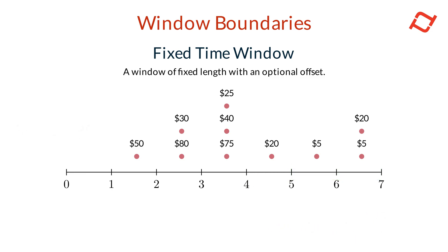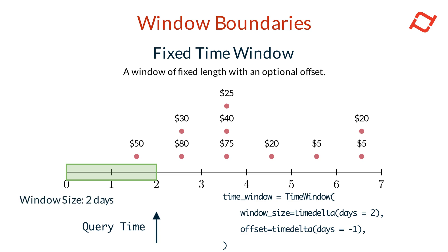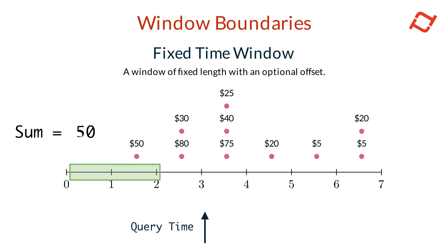You can optionally apply an offset to shift the window's position relative to the query timestamp using the offset parameter. For example, here we have a two-day window with an offset of minus one day, which will move the window to start one day earlier than the query timestamp.